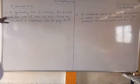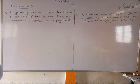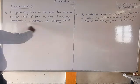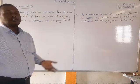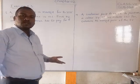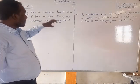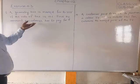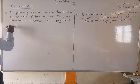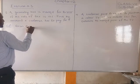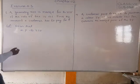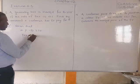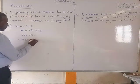Let's look at the first problem from Exercise 12.3. A geometry set is marked at ₹325 rupees. If the rate of tax is 12%, find the amount the customer has to pay. So the solution: the marked price is equal to ₹325 rupees. Now we find the tax, which is 12% of 325.